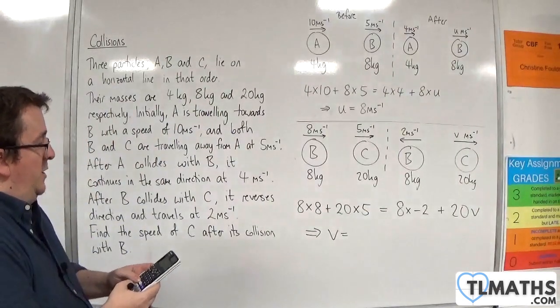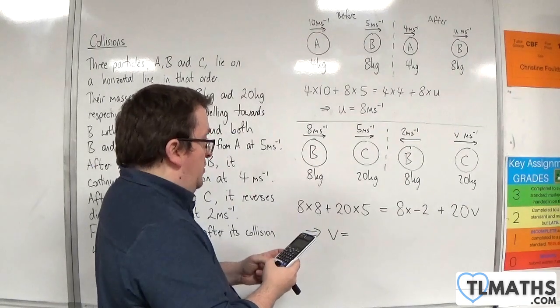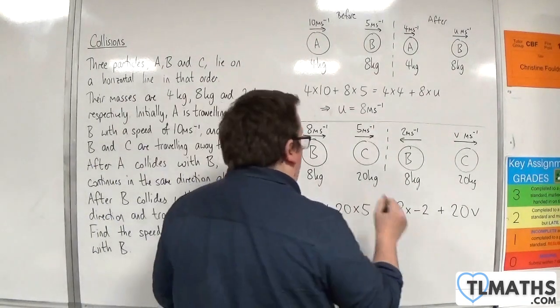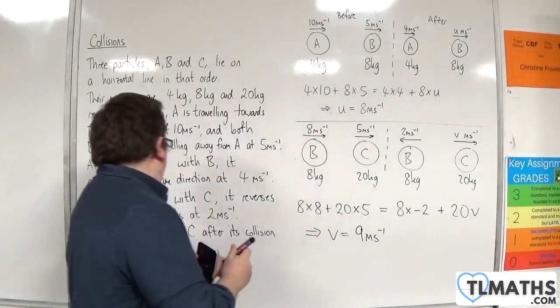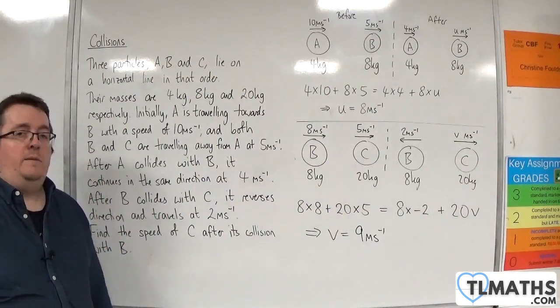So we have 8 times 8 plus 20 times 5. Then I need to add on 8 times 2 and then divide through by 20. And we get that the velocity will be 9 metres per second. So the speed of C after its collision with B will be 9 metres per second.